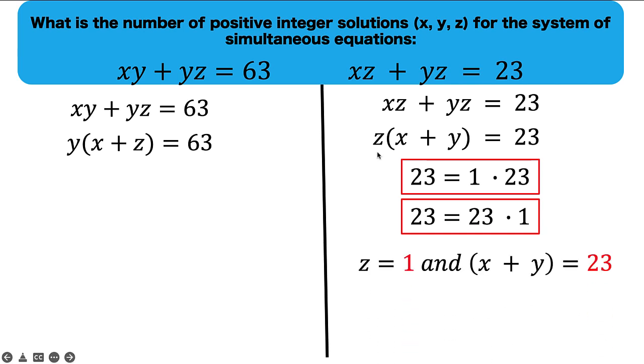This means that since z and the quantity x plus y are factors of 23, then it's either z is equal to 1 and the quantity x plus y is equal to 23, or it is the variable z that is 23 and the quantity x plus y is equal to 1.